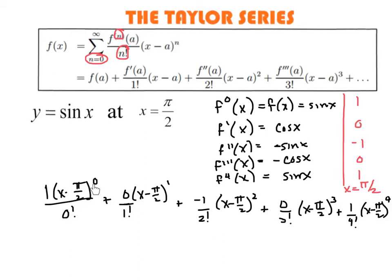Anything to the 0 power is 1. 0 factorial is 1. So this first term is just 1. Now this next piece right here, of course, 0 times anything is 0. So that is completely gone. Now I should just point out, these first two terms right here, just these two, these make the tangent line.